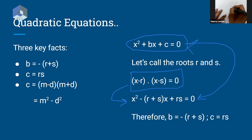And c here is nothing but product of both roots r and s. So these three key facts, by comparing two equations: b is negative r plus s, c is rs.